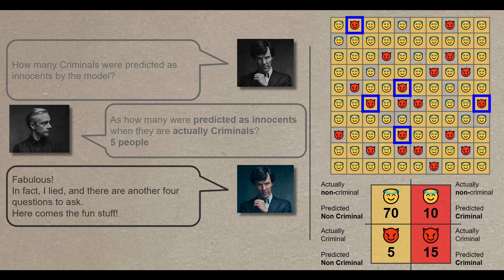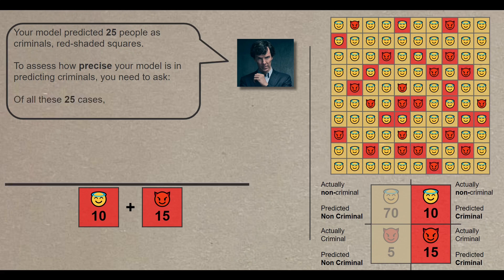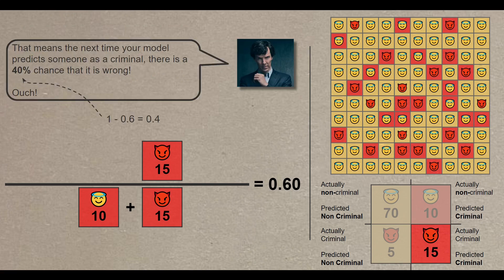Fabulous. In fact, I lied. There are another 4 questions to ask. And here come the fun stuff. You need now to assess the precision of your model. So your model predicted 25 people as criminal, denoted by red shaded squares. To assess how precise your model is in predicting criminals, you need to ask the following question. Of all these 25 cases, how many were actually criminals? That would be 15 divided by 10 plus 15 equals 60%. That means the next time your model predicts someone as a criminal, there is a 40% chance that it's wrong. Ouch.